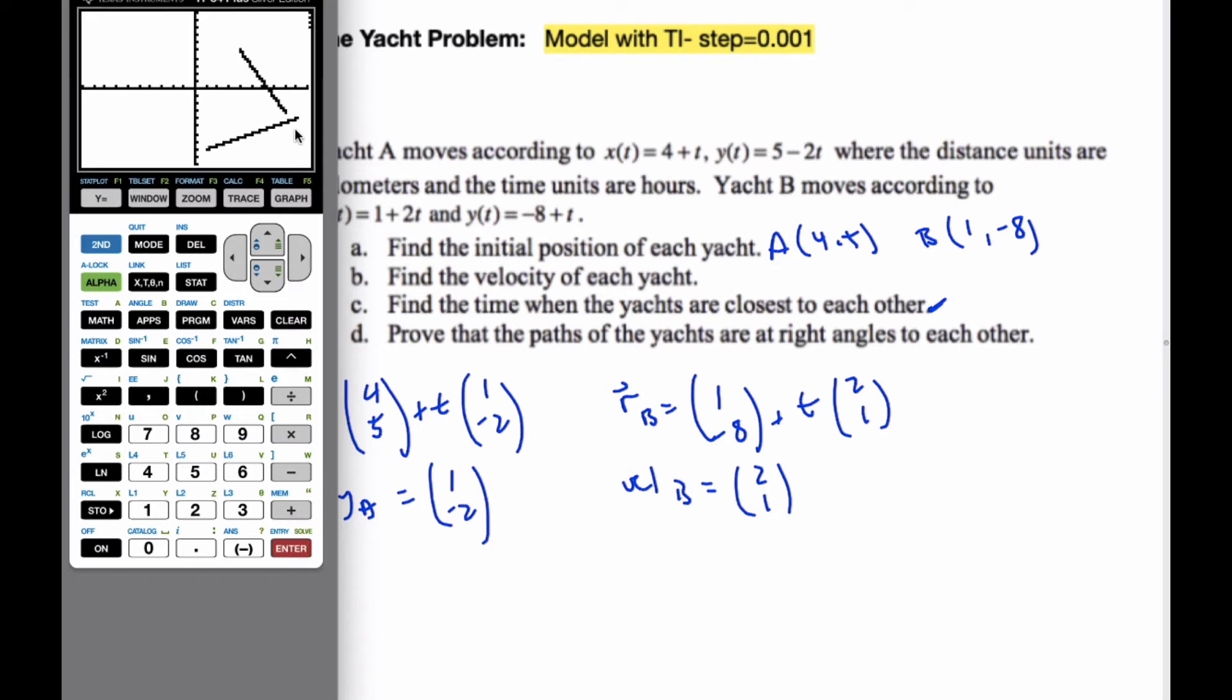And they're going at the same time. And if I pause it, you can see that this boat here, which is boat B, is past their point of intersection. And so if I keep going, eventually their paths will cross, but the boats are not hitting each other.